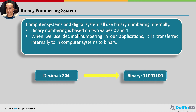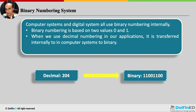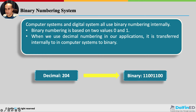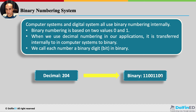When we use the decimal numbering system in our applications — say you type 15 times 5 on a calculator — inside the laptop, this is converted into the binary equivalent of 15 and 5, a digital operation happens to multiply them, and you get the decimal result. For example, the number 204 has a binary equivalent of 11001100. Don't worry — on the internet you can search for the binary equivalent of any number and find it.